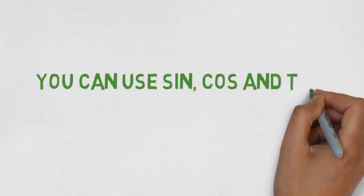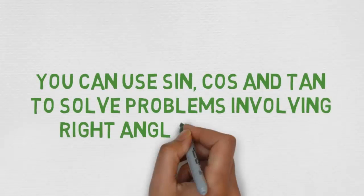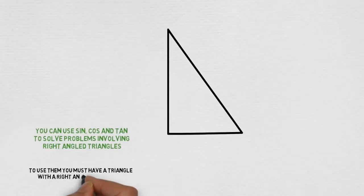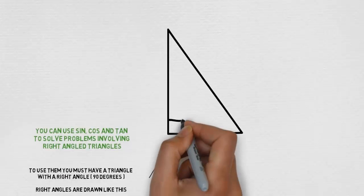You can use sine, cos, and tan to solve problems involving right-angled triangles. To use them, you must have a triangle with a right angle, 90 degrees, and right angles are drawn like this.